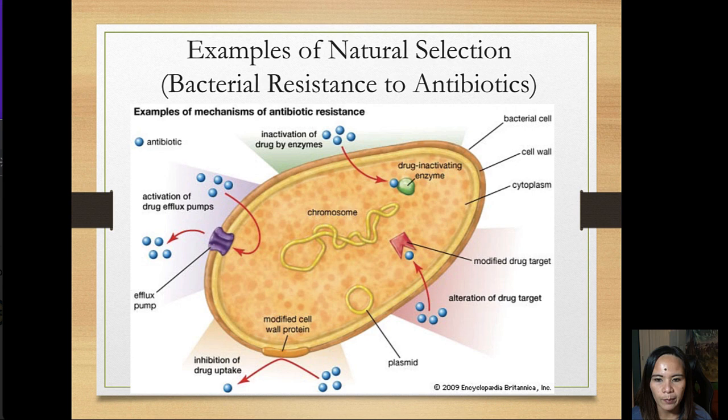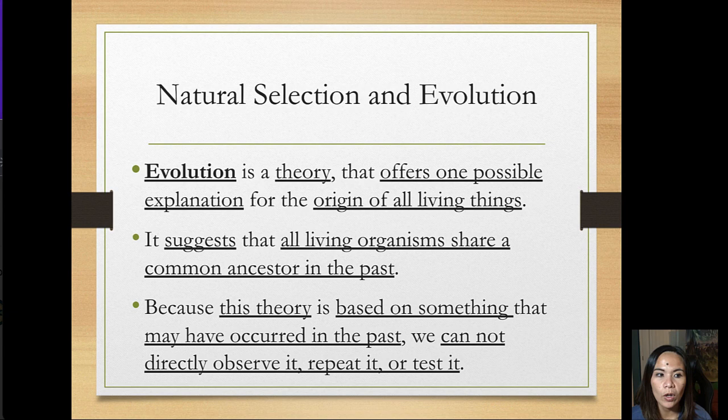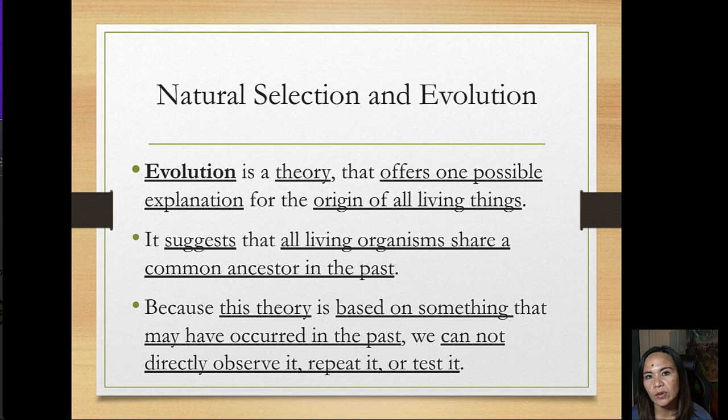What about evolution? Evolution is a theory that offers one possible explanation for the origin of all living things. It suggests that all living things have a common ancestor in the past. Because this theory is based on something that may have occurred in the past, we cannot directly observe it, repeat it, or test it.